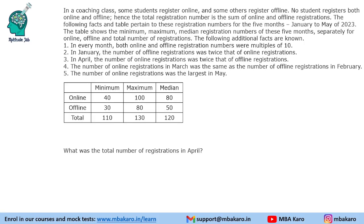Hello everyone, welcome to AptitudeJab. This set is from CAT 2023, Slot 3 DILR. It says that in a coaching class, some students register online and some others register offline. No student registers both online and offline, so there is no overlap. Hence the total registration number is the sum of online and offline registrations. The following facts and table pertain to these registration numbers for the 5 months January to May of 2023.